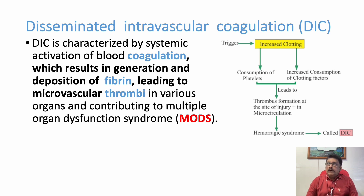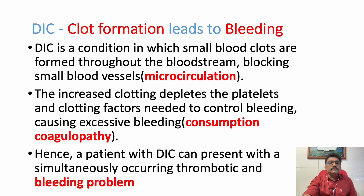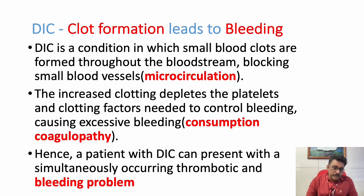There are two important problems: first, clot formation throughout the circulation, which is lysed by the body; and second, reoccurrence of thrombus formation, so consumption of platelets and coagulation factors is increased. This leads to reduction in platelet count and coagulation factors. Clot formation ultimately leads to bleeding — since large amounts of clots form throughout the vascular system, the body tries to dissolve them, and again clots reform. This results in consumption coagulopathy and consumption thrombocytopenia.